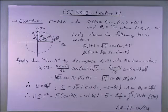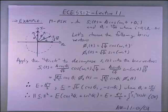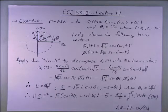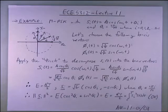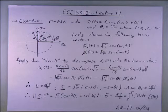Now I want to delve into a more complicated modulation scheme: MPSK — M-ary phase shift keying. Let's vectorize it the same way as before. We have phi_1(t) equal to the square root of 2 over T times cos(ω_c t), and phi_2(t) equal to the square root of 2 over T times sin(ω_c t). The question is: what is the general layout of PSK modulation?